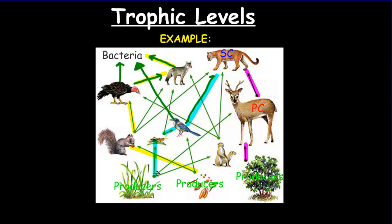Now the light blue food chain: the producer gets eaten by a grasshopper, which is a primary consumer. The grasshopper is eaten by a bird, making the bird a secondary consumer. The bird is then eaten by the cat, so the cat becomes a tertiary consumer for that particular food chain.